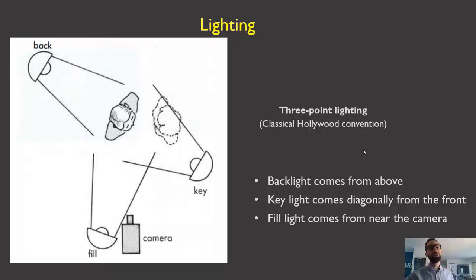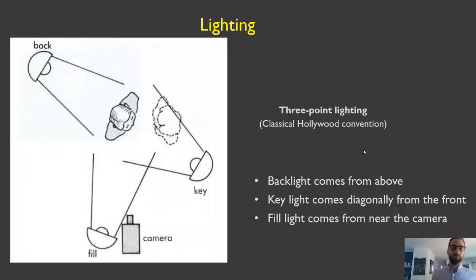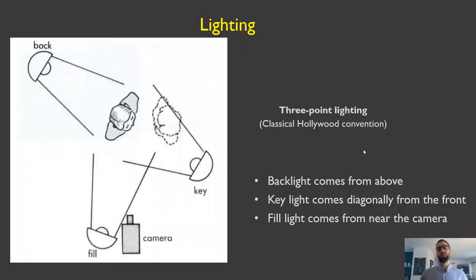One term I want you to know is three-point lighting. Three-point lighting is a classical Hollywood convention in which we have three lights surrounding a character, each serving a different function. A backlight comes from above, a key light comes diagonally from the front, and a fill light comes from near the camera.